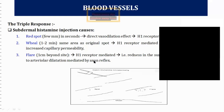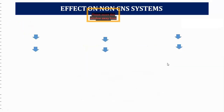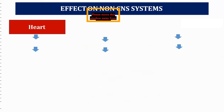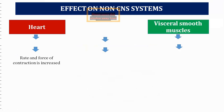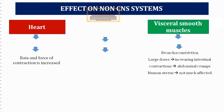Next, the effect on the heart: the heart has H2 receptors, and histamine produces a positive chronotropic effect — that is, both the rate and force of contraction are increased.